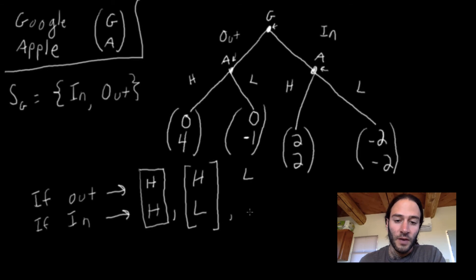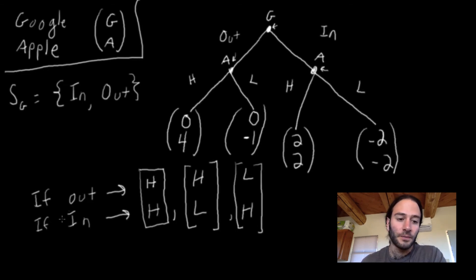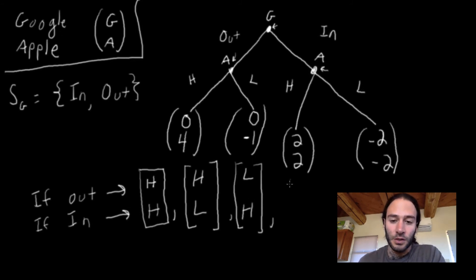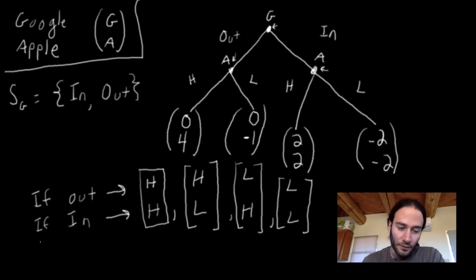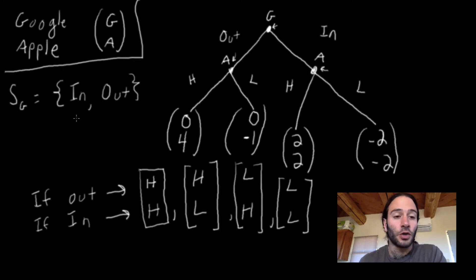We also have the strategy LH: if Google plays out, Apple charges a low price; if Google plays in, Apple charges a high price. And of course, the strategy LL: if Google plays out, Apple charges low; if Google plays in, Apple also charges low. So in this case Google has two strategies, but Apple has four strategies: HH, HL, LH, and LL.